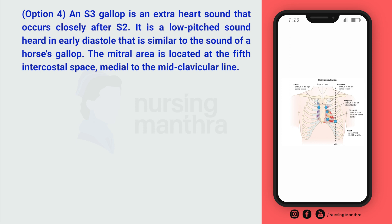Option D is the S3 gallop sound. S3 gallop is an extra heart sound that occurs closely after S2. It is a low-pitched sound heard in early diastole, similar to the sound of a horse's gallop. The mitral area is located at the fifth intercostal space, medial to the mid-clavicular line.